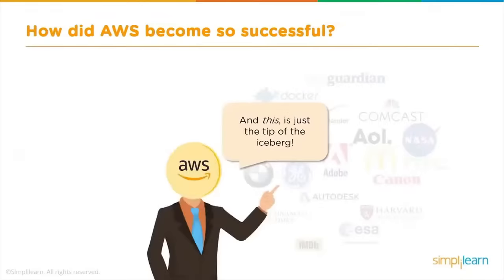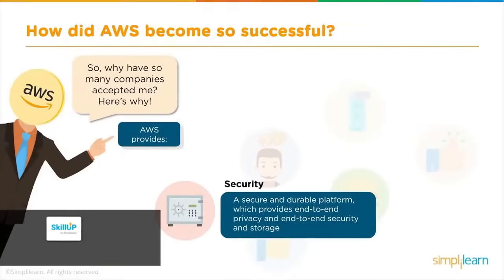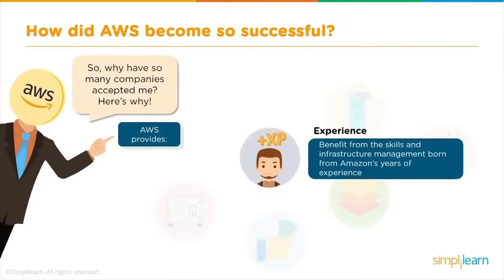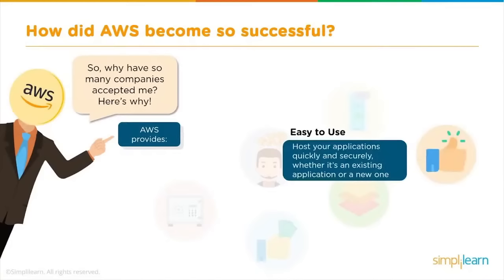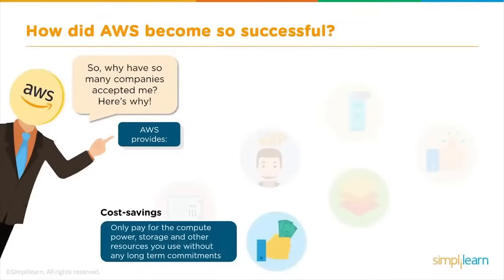This huge success and customer portfolio is just the tip of the iceberg. People are adopting AWS because of security and durability, end-to-end privacy and encryption. Experience — AWS tools and techniques are built upon years of experience. Flexibility — greater flexibility to select OS, language, and database. Easy to use — swift deployment of new or migrated applications. Scalability — applications can be easily scaled up or down. Cost saving — you only pay for the compute power, storage, and other resources you use, without any long-term commitments.